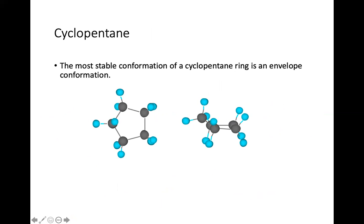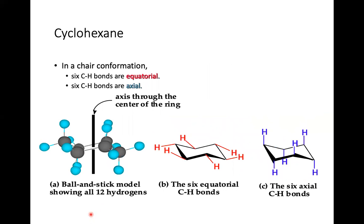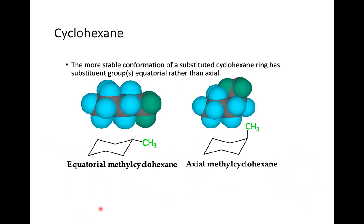The most stable conformation of the cyclopentane ring is the envelope conformation — it looks like an envelope. The most stable conformation of a cyclohexane ring is the chair conformation — it looks like a chair. All bond angles are approximately 109.5 degrees. In the chair conformation, six carbon-hydrogen bonds are equatorial and six are axial.